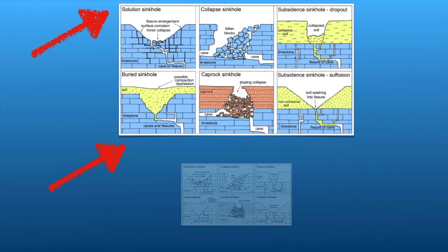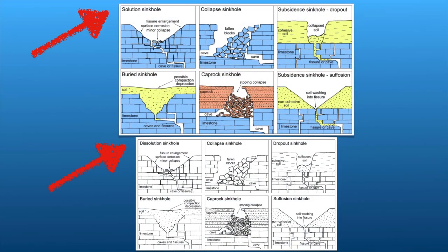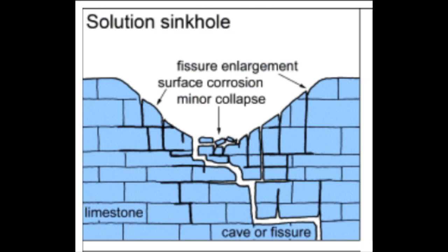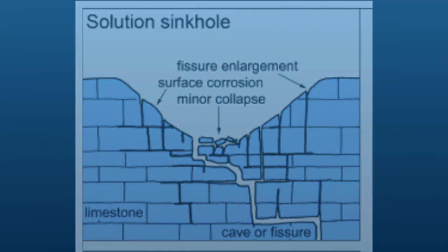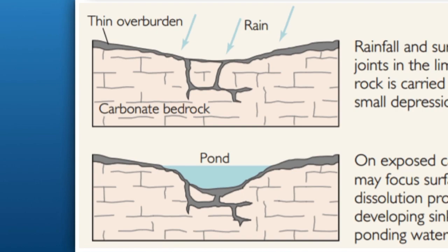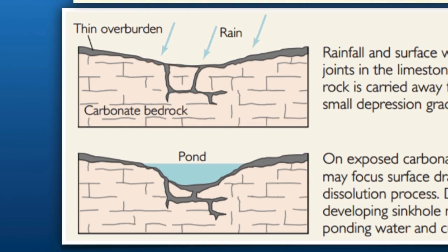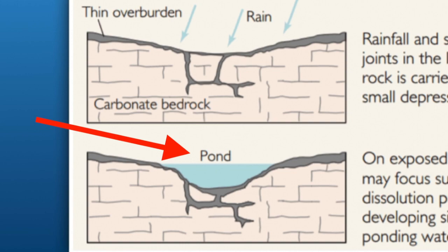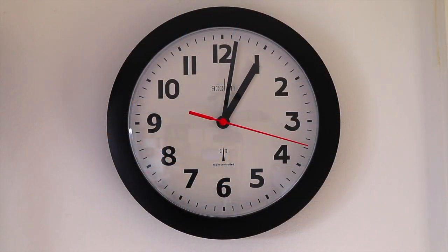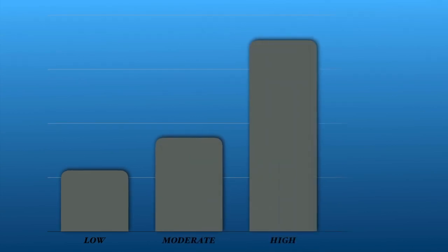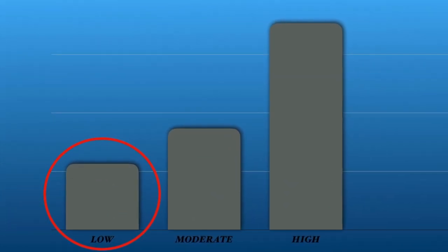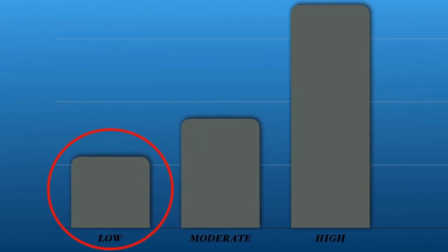Geologists divide sinkholes into three types. The first is a dissolution or solution sinkhole. In this type of sinkhole, there is little soil or vegetation over the limestone or other bedrock. Water from rain and runoff slowly trickles through crevices in the bedrock, dissolving it. As a result, a depression gradually forms. Dissolution sinkholes sometimes become ponds if the depression gets lined with debris, trapping the water inside. Dissolution sinkholes happen slowly and are generally not dangerous, but one that becomes a pond can drain suddenly if water makes it through the protective bottom layer.